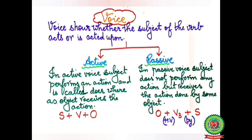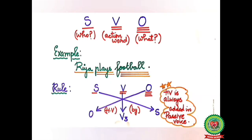On the other hand, in passive voice, the subject does not perform any action but receives the action done by some object. The sentence structure is object plus verb plus subject, where V3 is your past participle, and we have one helping verb after the object, and we use 'by' before the subject.